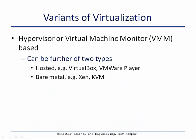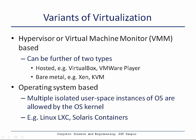Let us look at the variants of virtualization. The first is hypervisor or virtual machine monitor based, which can be of two further types. The second is operating system based, where you can have multiple isolated user-space instances of the base operating system kernel — examples being Linux LXC or Solaris containers. In the hypervisor-based case, the types are hosted — for example, VirtualBox from Oracle or VMware Player — and bare metal — for example, Xen and KVM in case of Linux.